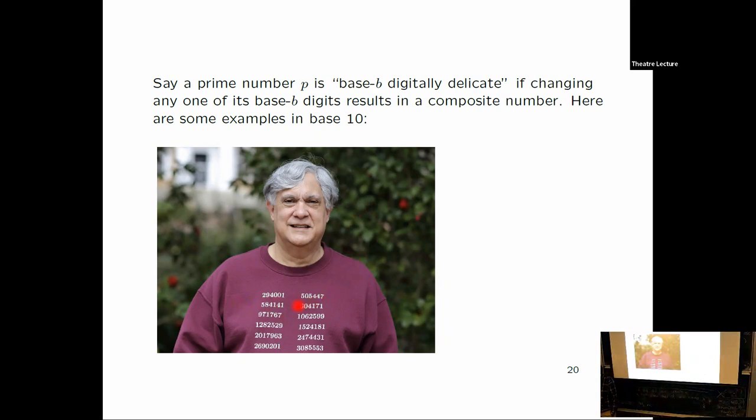So as an example, let's look at this very first one, 294001. Now change that one to a zero, it's composite. I could have changed it to a three, it would be composite. I could have changed the leading two to a one, it would be composite. Change the leading two to a six, it would be composite. So the question is, are there infinitely many of these?